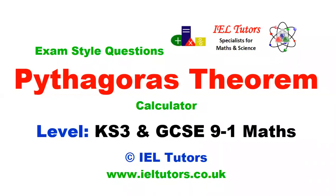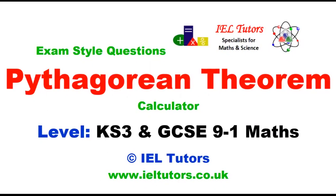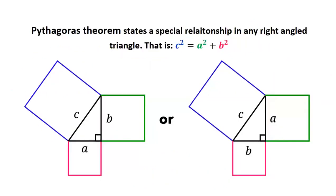Hi there. In this video, we'll learn about Pythagoras Theorem, or Pythagorean Theorem. Pythagoras Theorem states a special relationship between the lengths of any right-angled triangle, that is, c squared is equal to a squared plus b squared, where c is the longest side, opposite to the right angle, and we generally call it hypotenuse, and a and b can be interchangeably the two shorter sides.